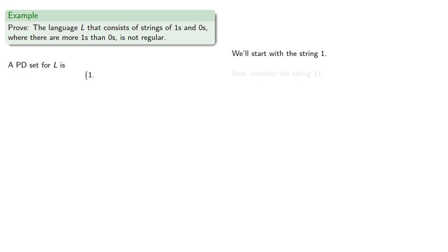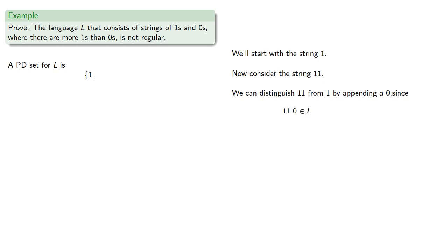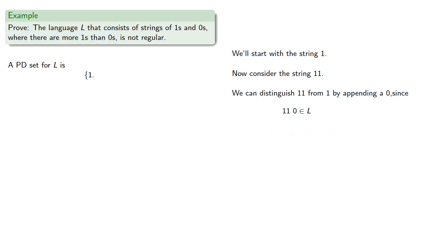Now consider the string 11. We can distinguish 11 from 1 by appending a 0, since 110 has more 1s than 0s so it's in our language, while 10 does not, so it's not in our language. So 11 is in our pairwise distinguishable set.